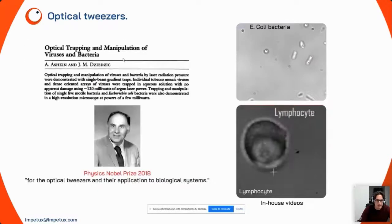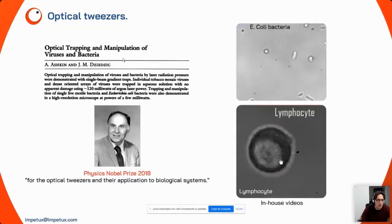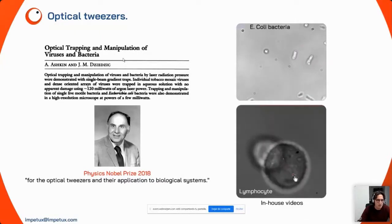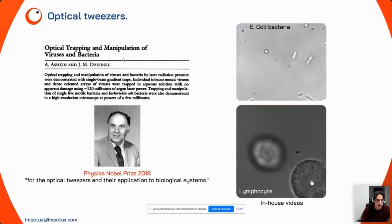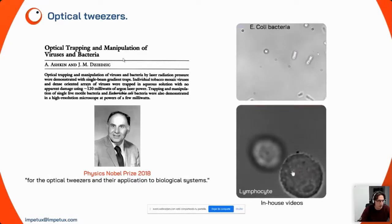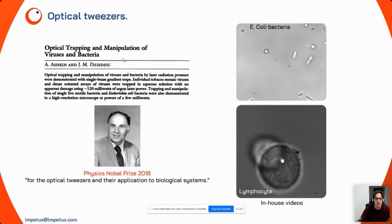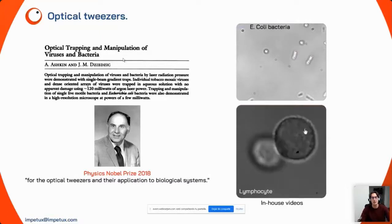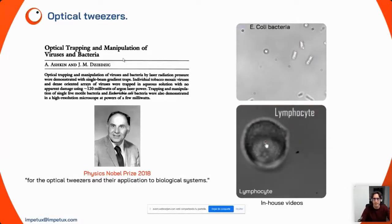This technology — optical tweezers — was invented by Arthur Ashkin in the 1970s, and he was awarded the Physics Nobel Prize in 2018 for optical tweezers and their application to biological systems.